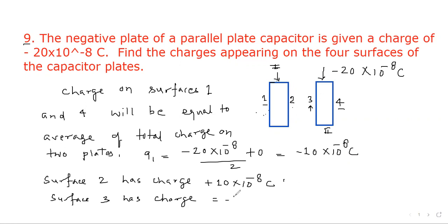So surface three will be equal to minus 10 into 10 to the power minus 8 Coulomb. Clearly the second plate will have charge minus 10 into 10 to the power minus 8 Coulomb, which is the charge on the fourth surface, and the third surface has charge minus 10 into 10 to the power minus 8 Coulomb. So the total equals the charge given to the negative plate, and that is our answer.